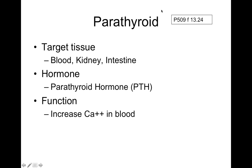Parathyroid hormone targets blood, kidneys, and intestine. The parathyroid glands are on the outside of the thyroid gland. If you have low blood calcium, the parathyroid glands release parathyroid hormone, which increases vitamin D synthesis by the kidney, increases calcium absorption in the intestine, and increases osteoclast activity to break down bone and release calcium. We need calcium in our blood to continue to live.